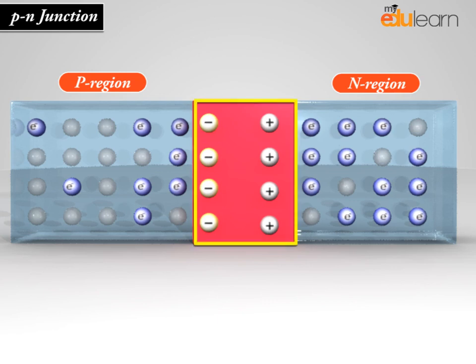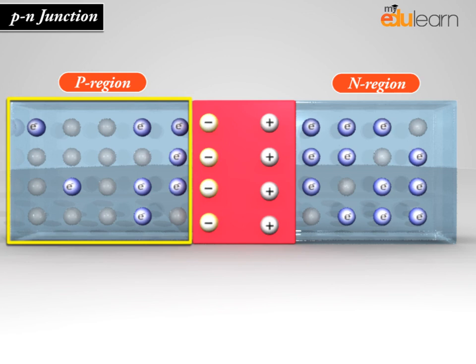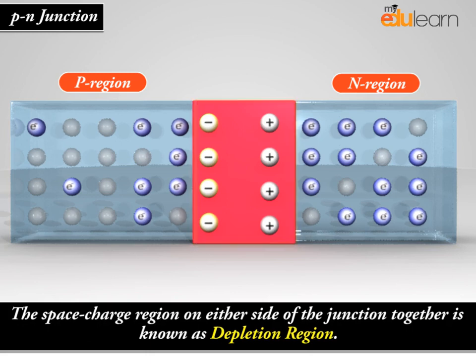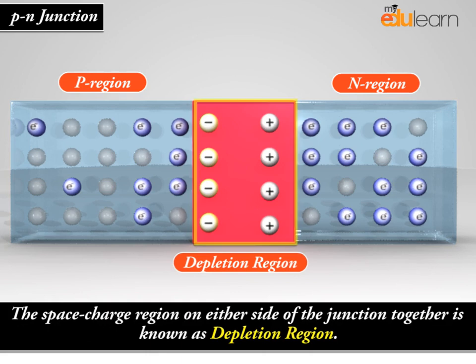Combination of electrons and holes depletes the holes in the P-region and electrons in the N-region near the junction. The space charge region on either side of the junction together is known as the depletion region.